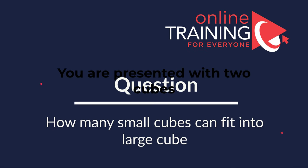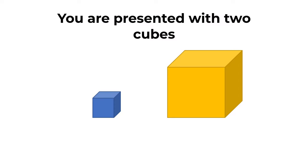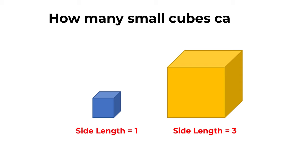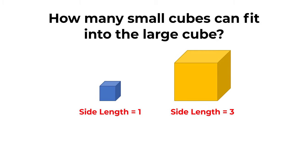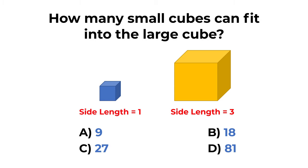Here's a cool question you frequently see on the test. You're presented with two cubes: one cube has side length equal to one unit, and a second larger cube has side length equal to three units. How many small cubes can fit into the large cube? You have four choices: A) 9, B) 18, C) 27, and D) 81.